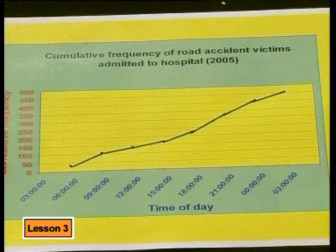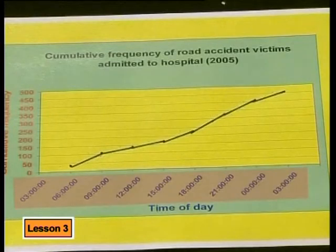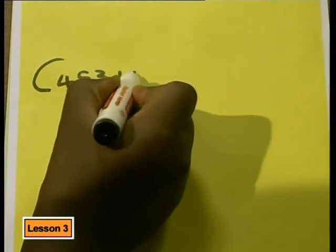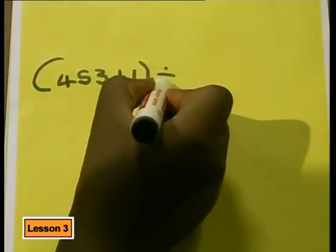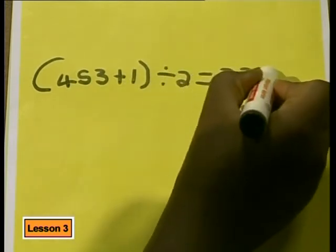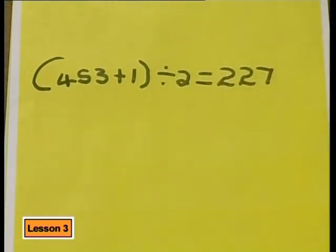Here's another use for the cumulative frequency graph. We can read off the median and the upper and lower quartiles from it. Because the data is grouped into three-hour intervals, we don't have the exact number of road accidents for every hour. So what we can do is find the positions of the median and the upper and lower quartiles. Let's find the median position first. The number of values in our data set is 453 because that is the cumulative total. The median divides the data into two equal parts, so we need to find the value that is in the middle.